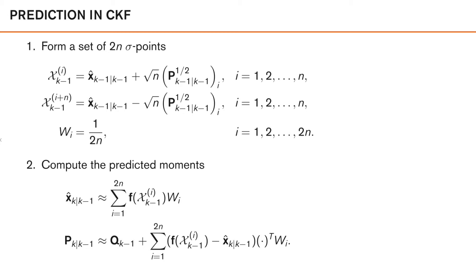To perform prediction using the cubature rule, we make slight adjustments to the set of sigma points and weights. We basically remove the sigma point at the mean and adjust the positions of the sigma points slightly. To approximate the mean, we again evaluate our sigma points in f and compute the weighted sum. Similarly for the predicted covariance, we plug in the sigma points, evaluate the weighted sum, and add the uncertainty from the noise covariance to obtain the predicted covariance.